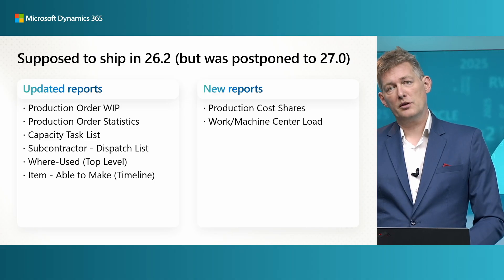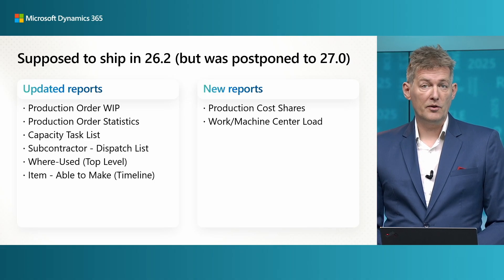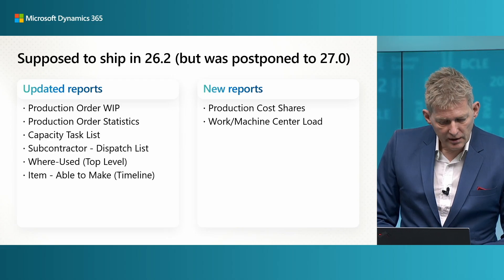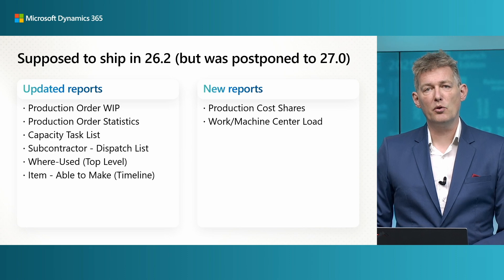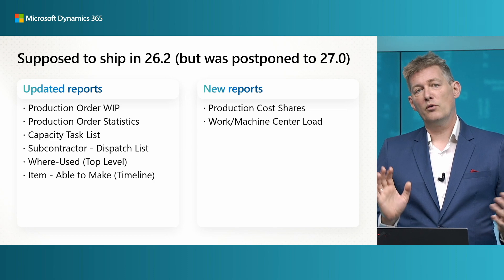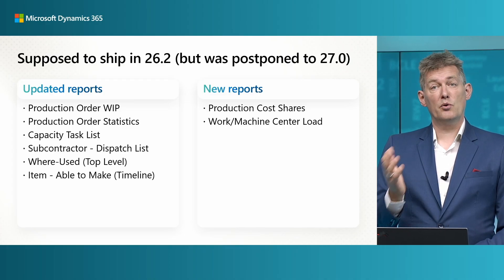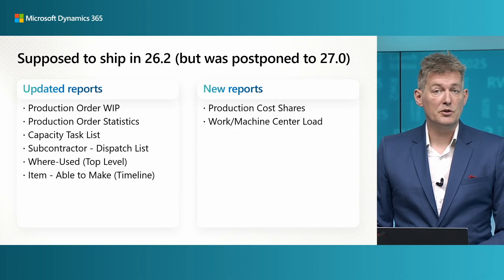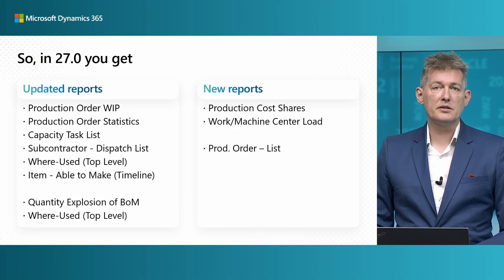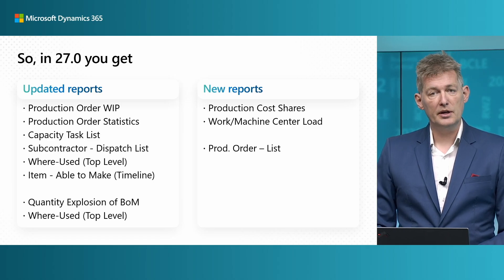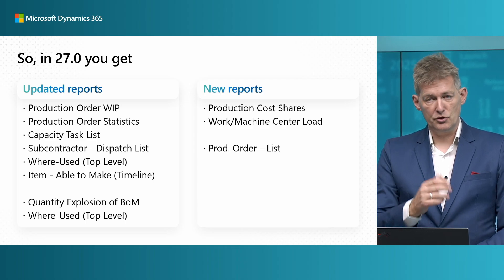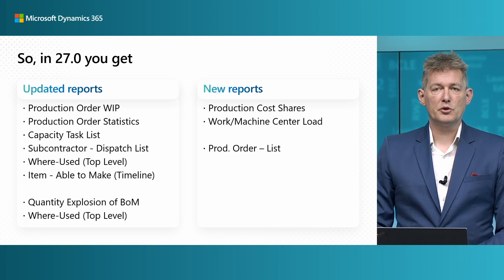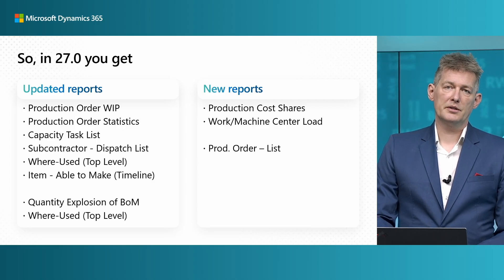If you watched the video from the last launch event for 2025 Wave 1, I had a video there on manufacturing reports as well, where I mentioned eight reports — six updated and two completely new. They were supposed to ship in version 26.2 but we needed to postpone that until version 27.0. So if you're watching this for version 27 or 2025 Release Wave 2, all of those reports are there, plus three more: quantity explosion of bill of material, where used top-level — the one I just showed you — and a completely new report for production order list. All the postponed reports plus three new ones are what you get in version 27.0.